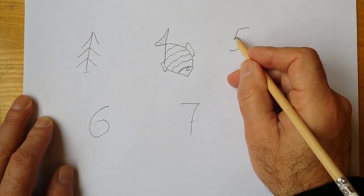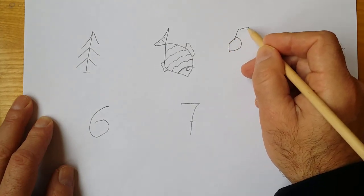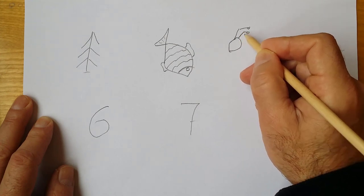Number 5 will be the head of ants. We draw the torso of ants and feet. We draw eyes and mouth.